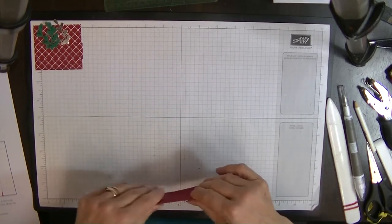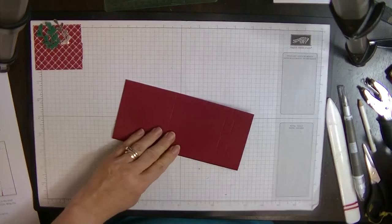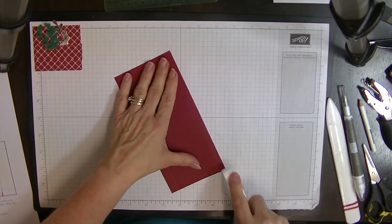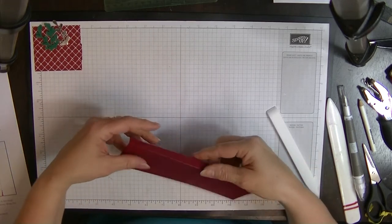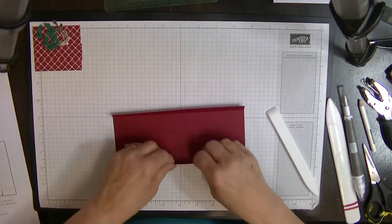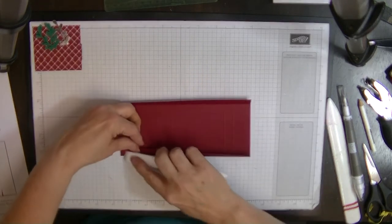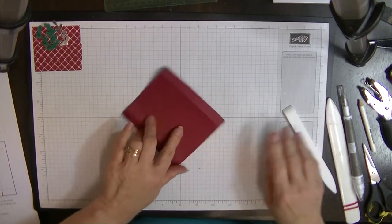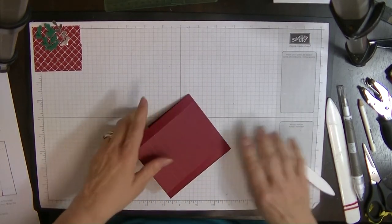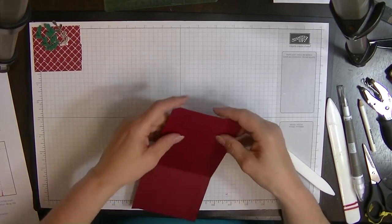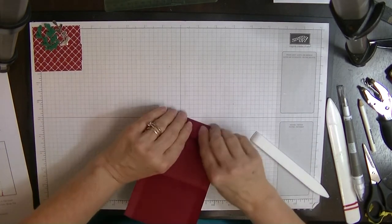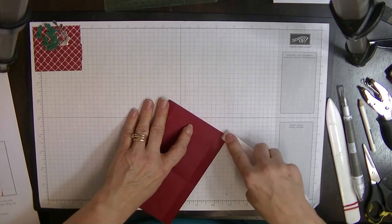So now what we're going to do is we're going to fold and burnish all these score lines. So because Cherry Cobbler is quite thick, I think that the die they use must really give the card a lot more thickness. It always seems so much thicker to me than the other card.